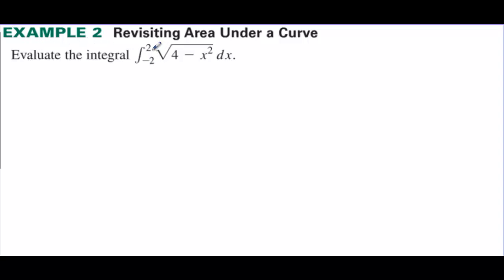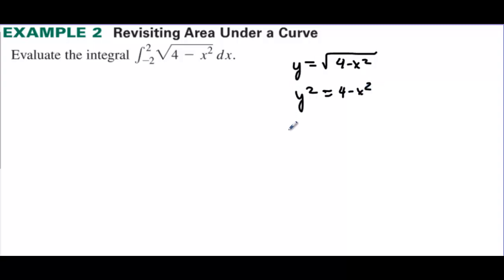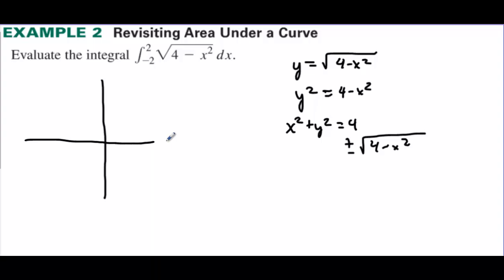Evaluate the integral from negative two to two of the square root of four minus x squared dx. This is the equation of a circle — specifically the top half of the circle. It came from y equals the square root of four minus x squared. If we square both sides, we get y squared equals four minus x squared, and adding x squared over gives x squared plus y squared equals four. That's a circle with a radius of two. Solving for y gives plus or minus, where the plus is the top half and the minus is the bottom half.